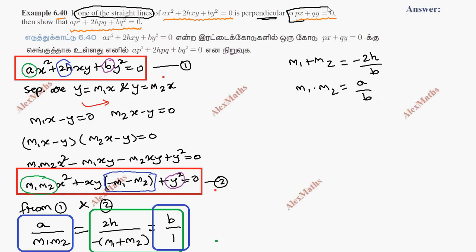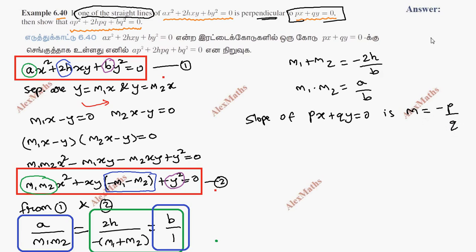This perpendicular line: the slope of m1 is the slope of px plus qy equal to 0, which is m equal to minus p by q — that is, slope equals minus x-coefficient by y-coefficient. Now we use the m1 plus m2 value and m1 into m2 value.